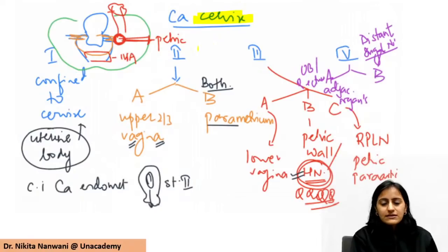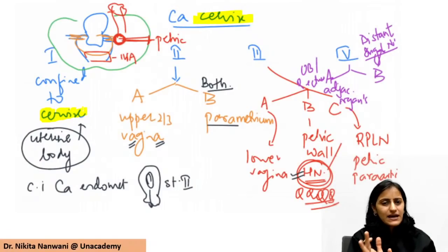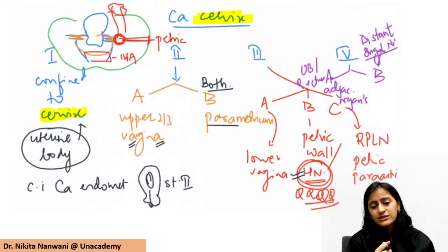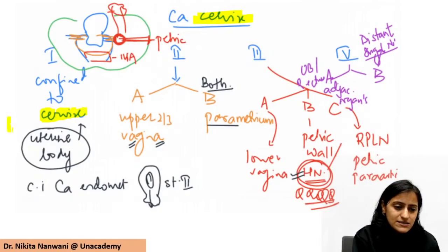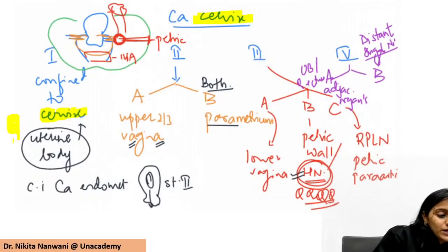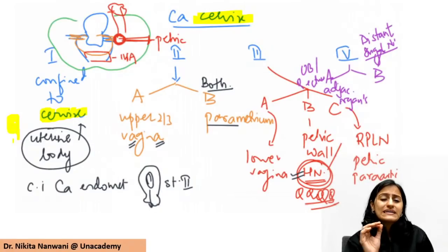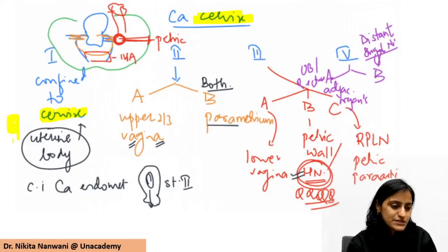In ca cervix, all cancer stage 1 means the cancer is confined to that organ - so ca cervix stage 1 is confined to the cervix. An important question that can be asked in the exam: what if in a patient of ca cervix the uterine body is also involved? What stage would that be?